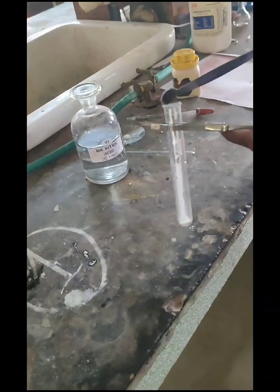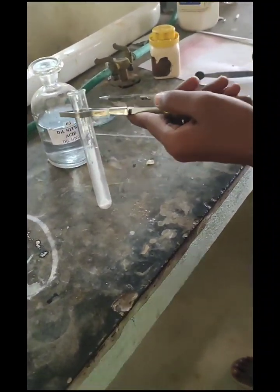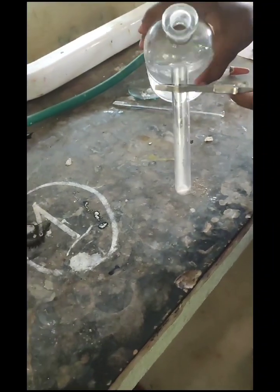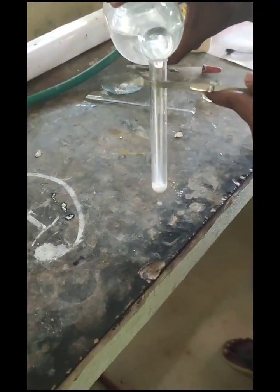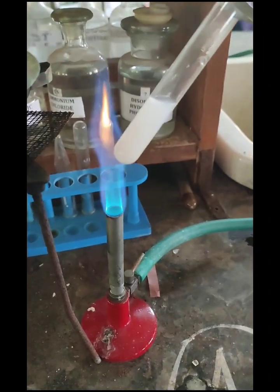For the phosphate test, take around 10-15 mg of substance in a test tube and add 0.5 ml of dilute HNO3. Then boil it for a few minutes.